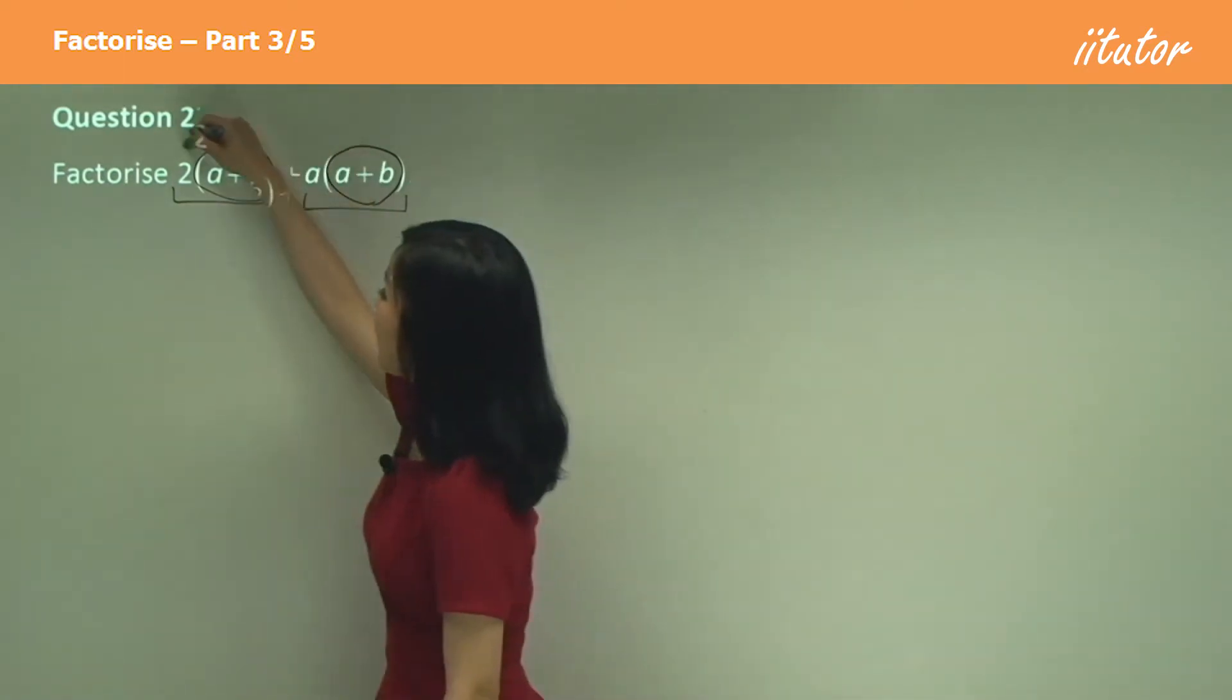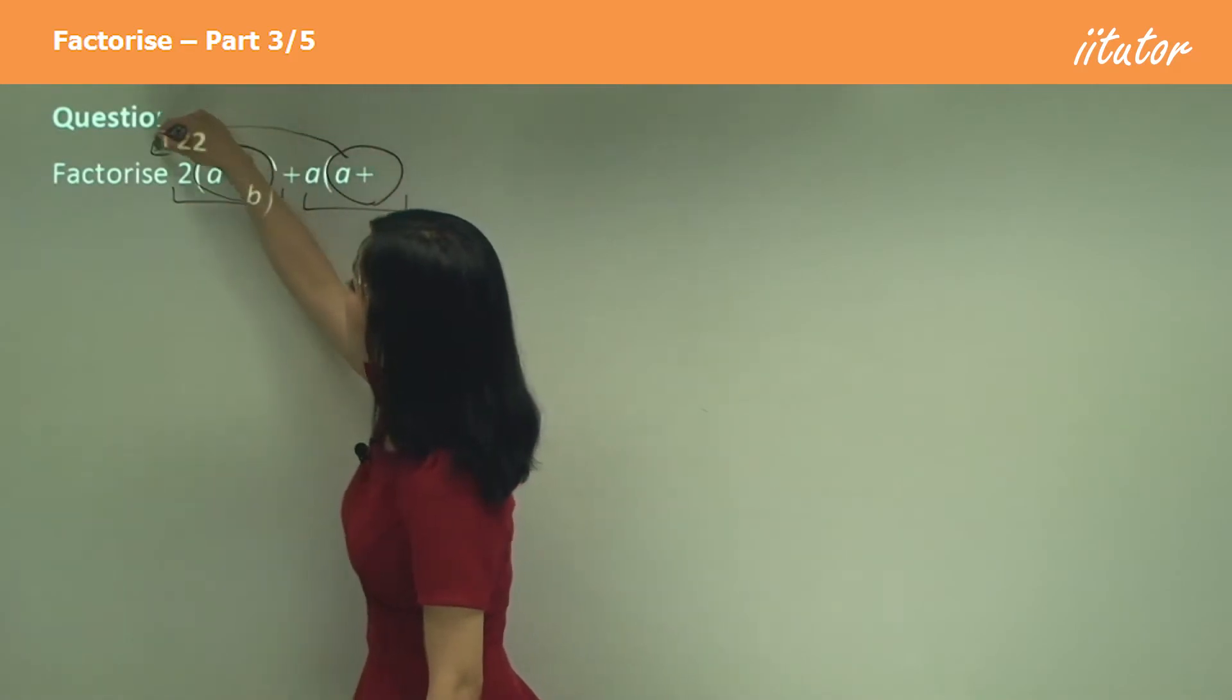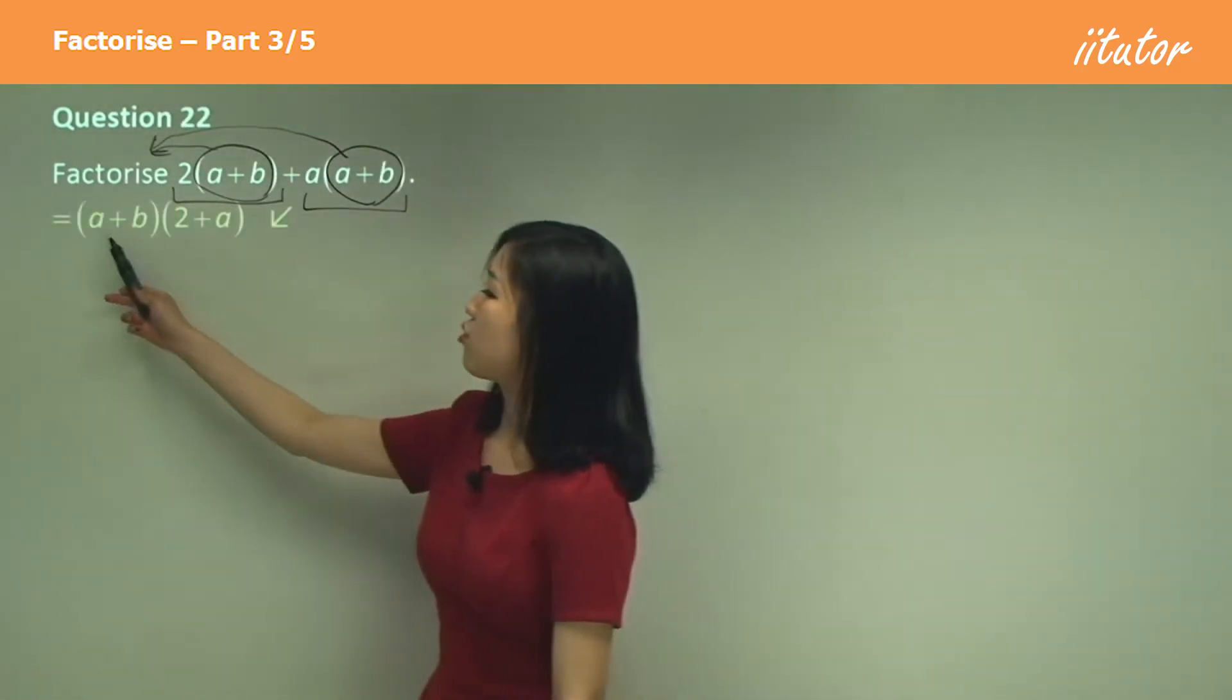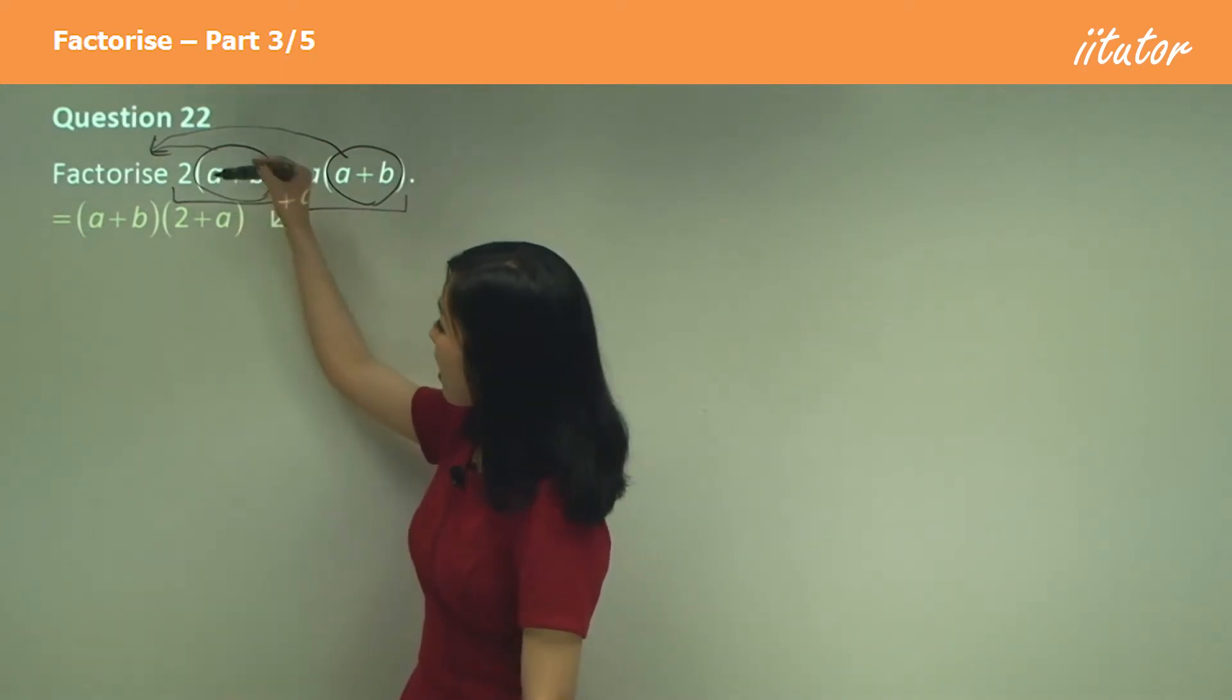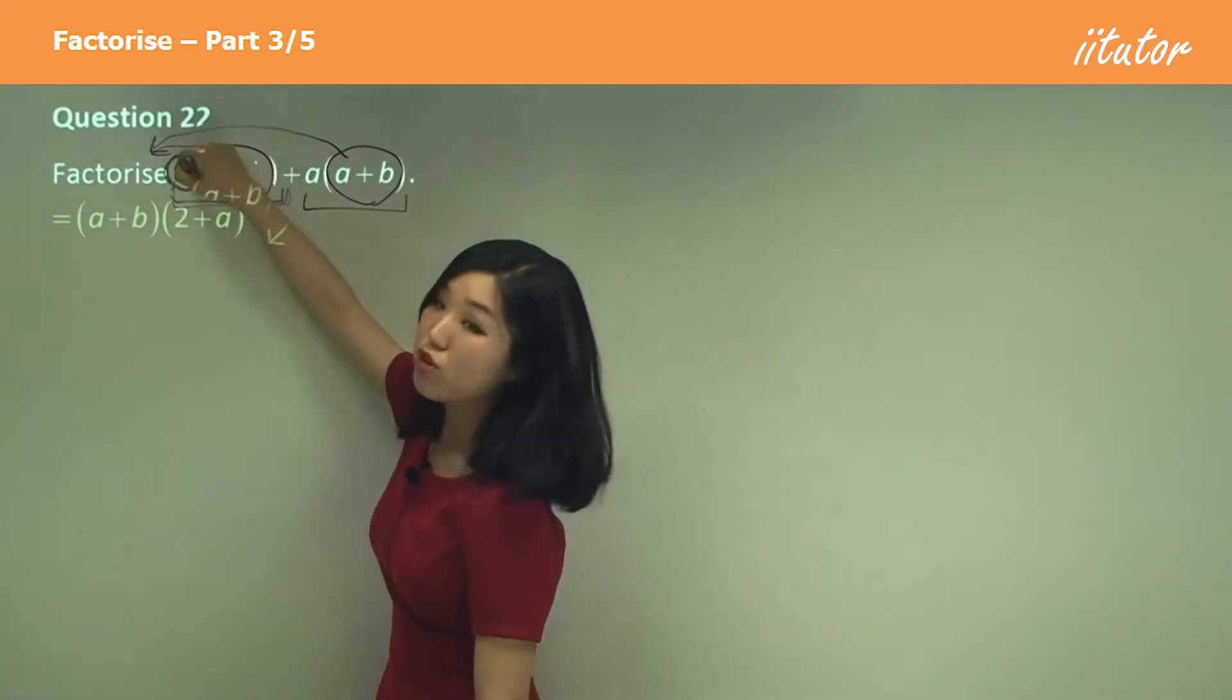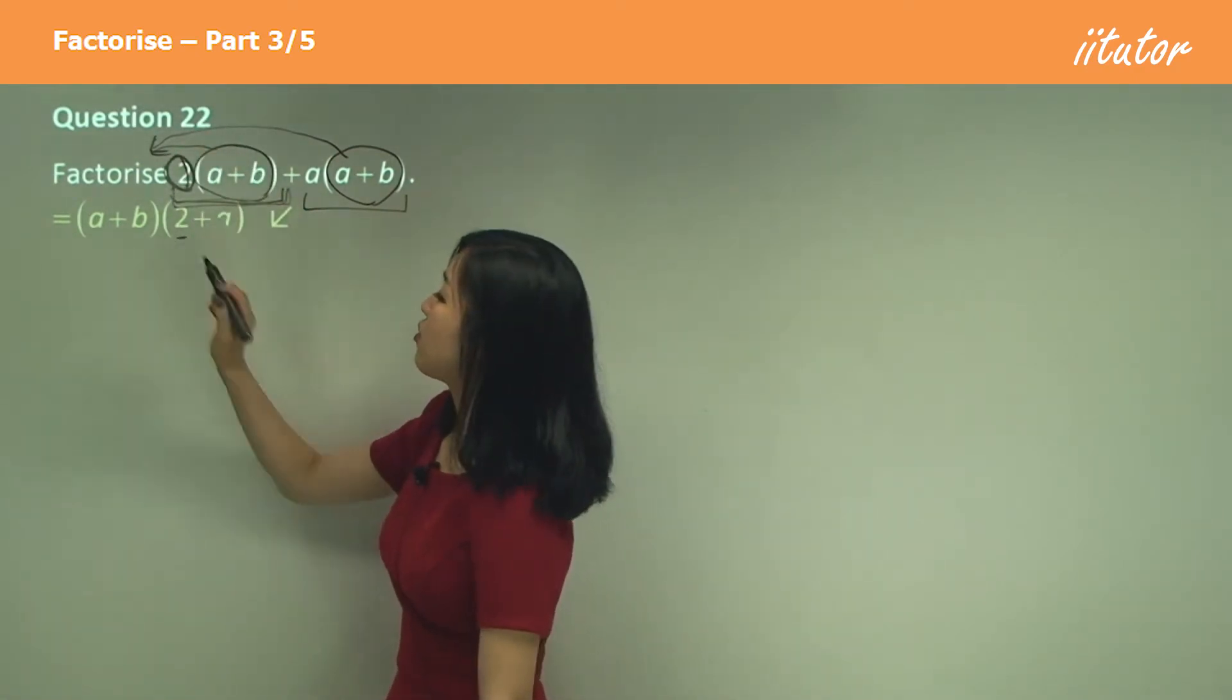So we take the a plus b out the front like that. So we just have from this term, we just have the two left. So that's why we have two there.